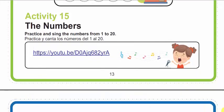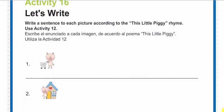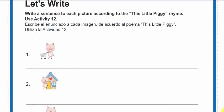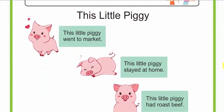Let's continue with the next activity. Activity number 16: Let's Write. Write a sentence for each picture according to This Little Piggy rhyme. Use activity 12. Vamos a escribir enunciados para cada imagen utilizando el poema.